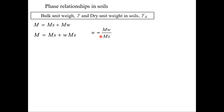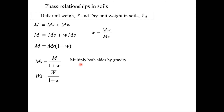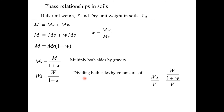Substituting into the previous equation, total mass equals mass of solids plus water content multiplied by mass of solids. Taking mass of solids as a common factor, total mass equals mass of solids times (1 + water content). Solving for mass of solids: mass of solids equals total mass divided by (1 + water content). Multiplying both sides by gravity gives total weight and weight of solids. Dividing both sides by total volume, dry unit weight equals bulk unit weight divided by (1 + water content).